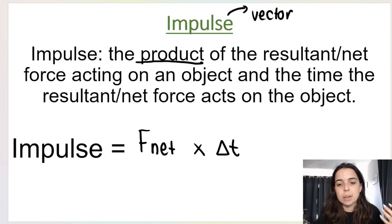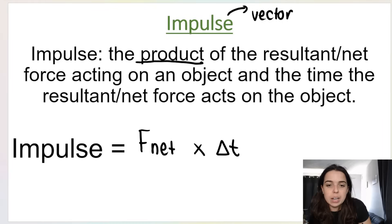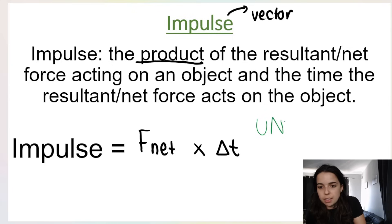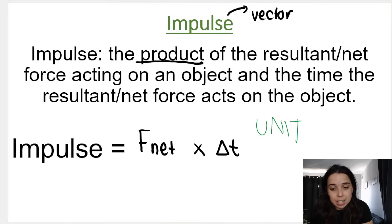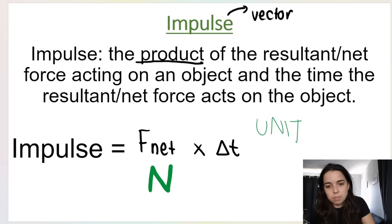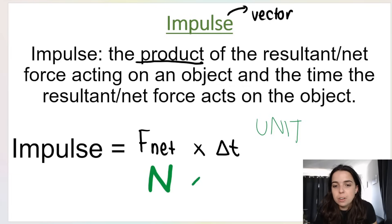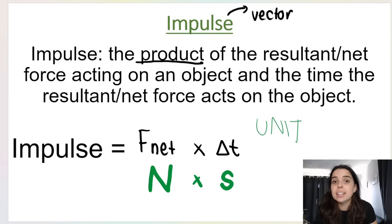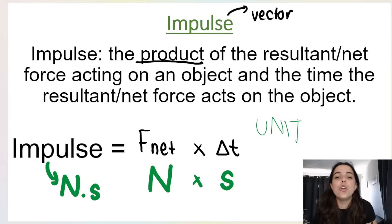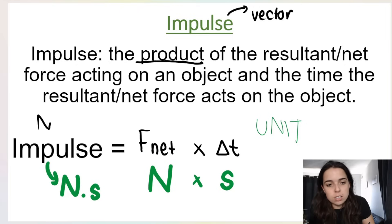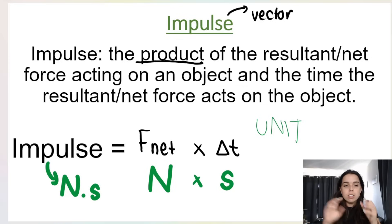Looking at the formula F net times delta t, this allows us to figure out the unit for impulse. The unit for F net is newton, and the unit for time is seconds. Newton times seconds gives us the unit for impulse, which is newton seconds. Take note — it is not newtons per second. It is newton seconds, written as N·s.